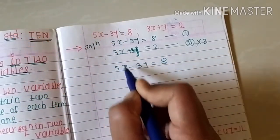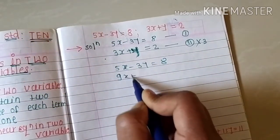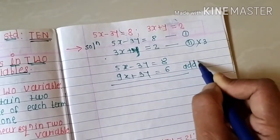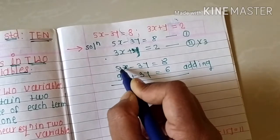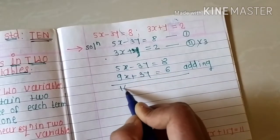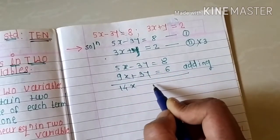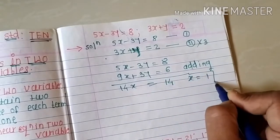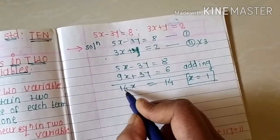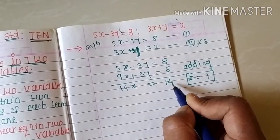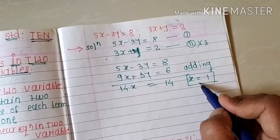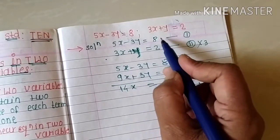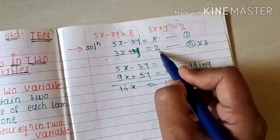After multiplying equation two by 3 we get 9x plus 3y equals 6. Taking addition of the two equations: 9x plus 5x gives 14x, and the plus and minus 3y cancel. So 14x equals 14, giving x equals 1.